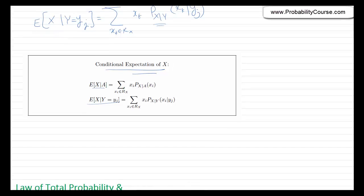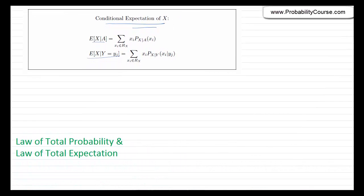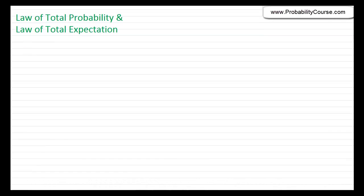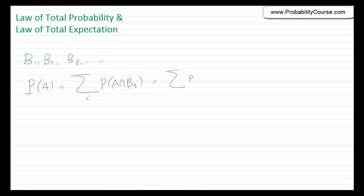Before talking about an example, let's also discuss the law of total probability and the law of total expectation. The law of total probability states that if I have a partition of the sample space B1, B2, B3, and so on — meaning these are disjoint sets that cover the entire sample space — we can write the probability of any event A as the summation of P(A ∩ Bi), which equals summation of P(A | Bi) * P(Bi). This is the law of total probability.